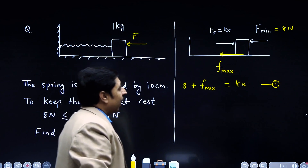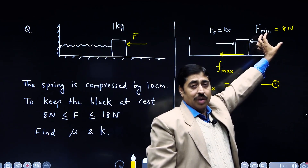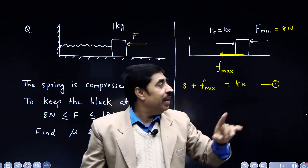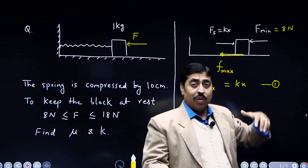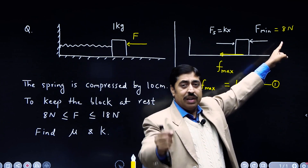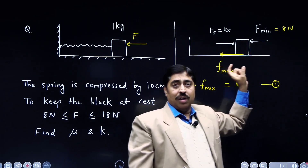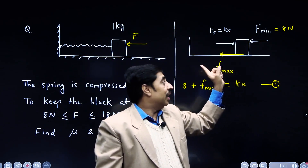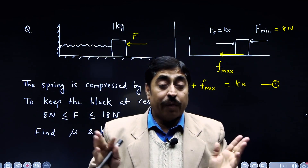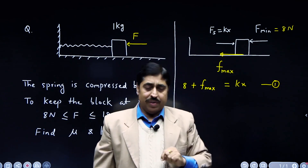If I reduce this force below 8 Newton, friction plus this force will be unable to balance the push of the spring and the block will slide. But if I increase the force to, say, 10 Newton, the block will not start moving in the other direction. If you increase the applied force, friction decreases by the same amount — so 10 Newton applied plus 8 Newton friction still equals K·X. The ultimate goal of friction is to prevent any relative motion; it adjusts its magnitude to keep the block at rest.